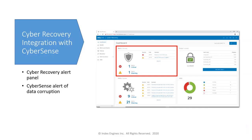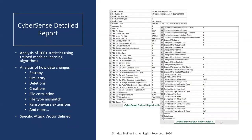All you need to do is look at the dashboard and see if an alert has been generated — if so, data corruption has occurred. Attached to the alerts comes a full listing of all the analytics.